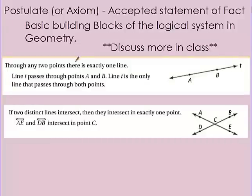One part of geometry is we try to prove things, and we have statements of facts — these are called postulates or axioms. It's an accepted statement of fact, and these are what we use to build geometry proofs. These are the foundations to prove things match or don't match. These are just statements of fact that you need to know — this is always true.